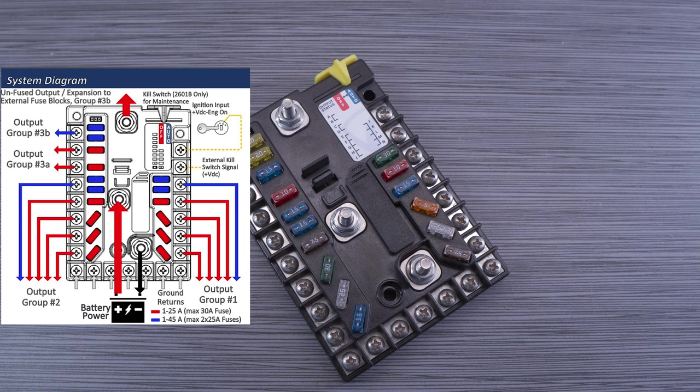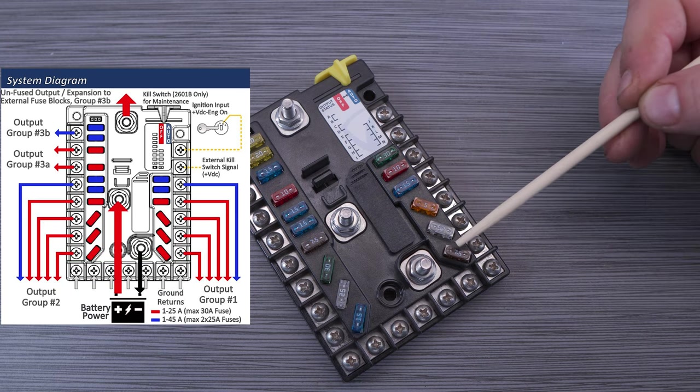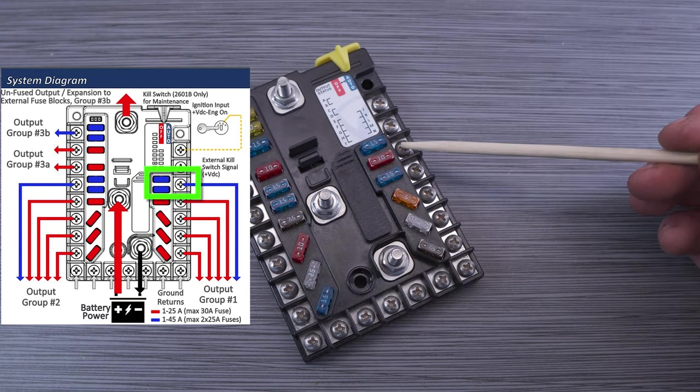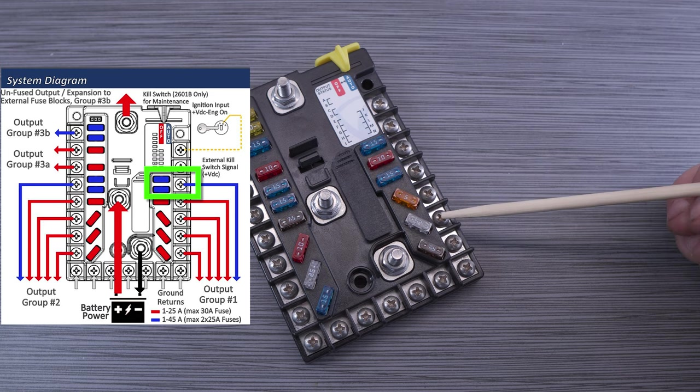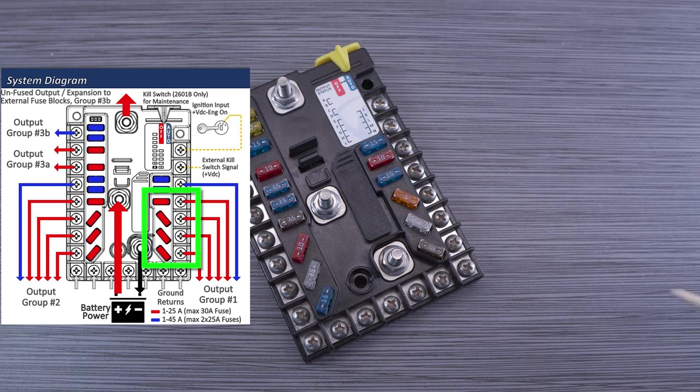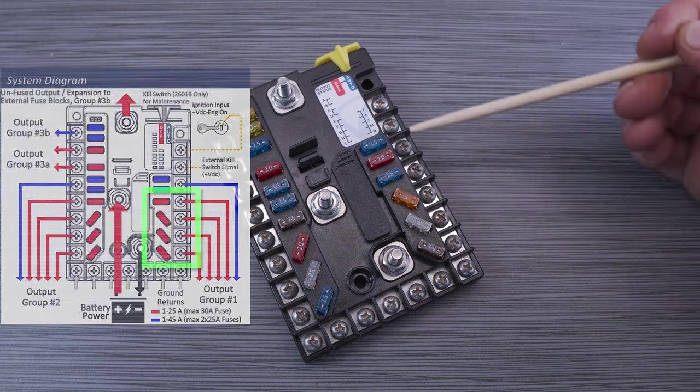A similar fuse configuration and current capability applies to output group number 1 as well. At the bottom are ground return terminals marked number 1 through 7. On the right side we have output group number 1. It essentially mirrors output group number 2 in that at terminal J is the 45 amp rated double fuse terminal and below that terminals K through N are 25 amp rated terminals, once again for total current capacity which is rated at maximum of 75 amps.